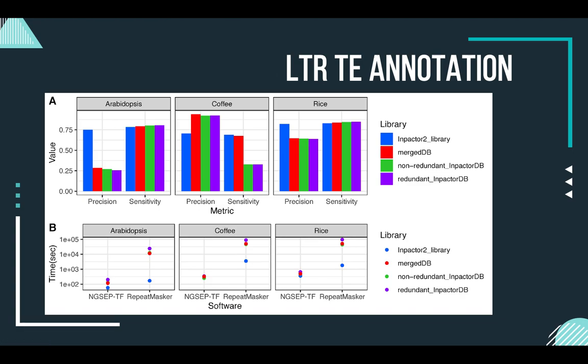We analyzed Arabidopsis, coffee, and rice. As you can see, we got higher than 75% precision and sensitivity using those libraries.